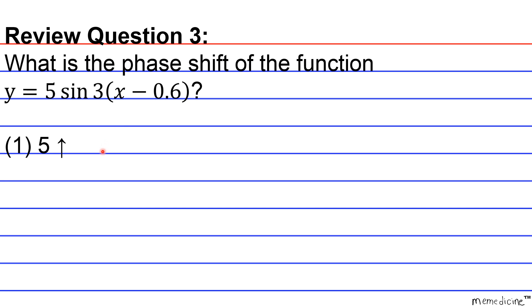Is it 1, 5 up? 2, 5 units down? 3, 0.6 units to the right? Or 4, 0.6 units to the left?